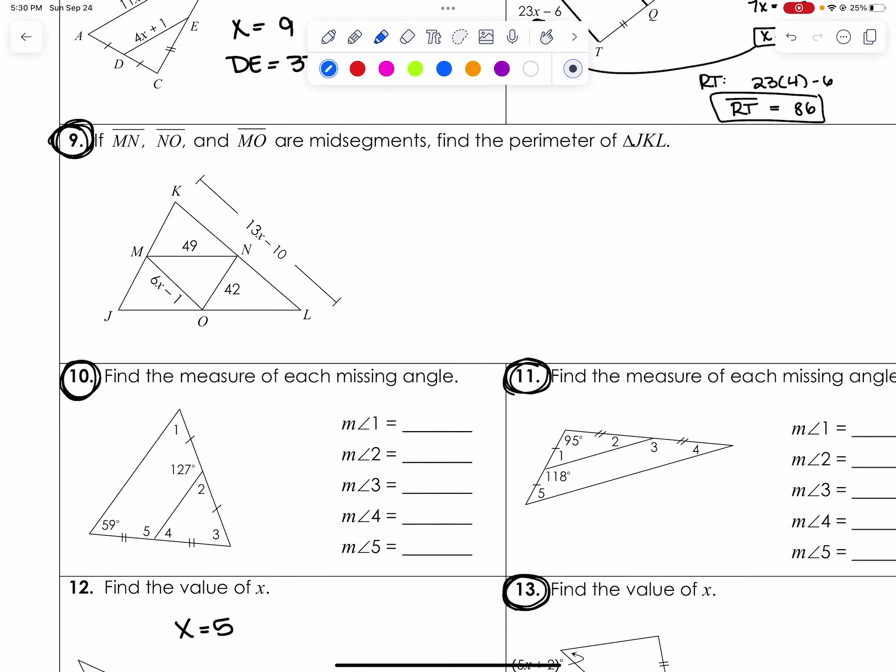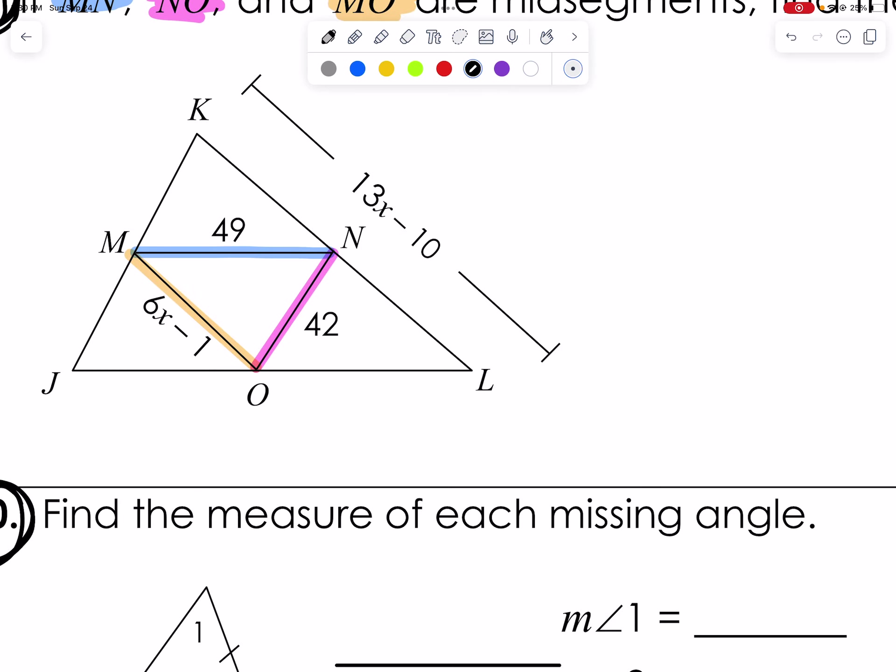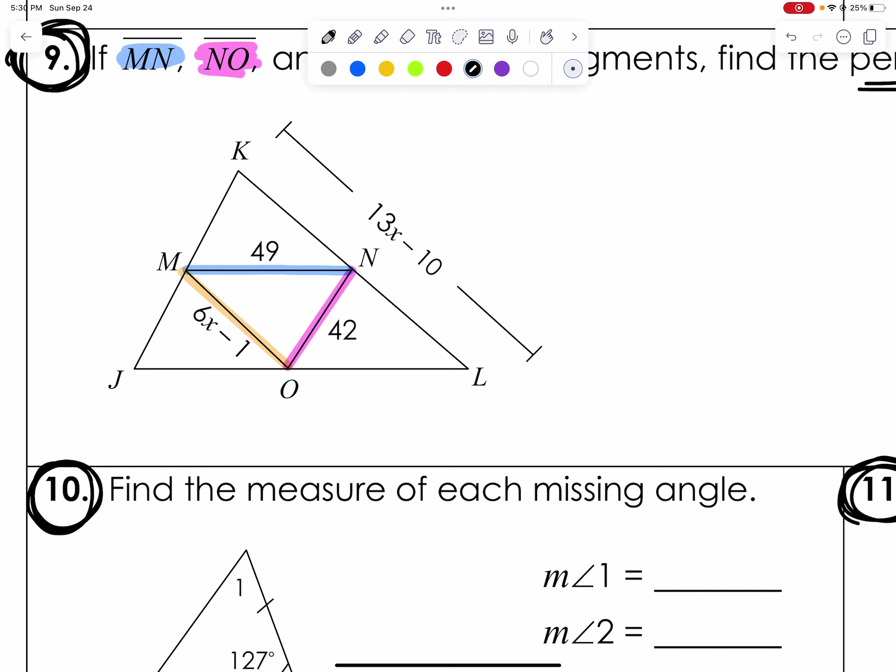Looking at 9, I am going to color code here because I'm having a lot of information show up. So MN, I'm going to put in blue, MN is here. NO in pink, NO is here, and MO in orange, and MO is here. They're all the inside midsegments. Find the perimeter, meaning adding up all the sides of triangle JKL. Now one might think, where do I even start with this? Honestly, you can start wherever you want. I am going to go ahead and start with the terms that have X's in them because I want to get rid of the X's as soon as possible.